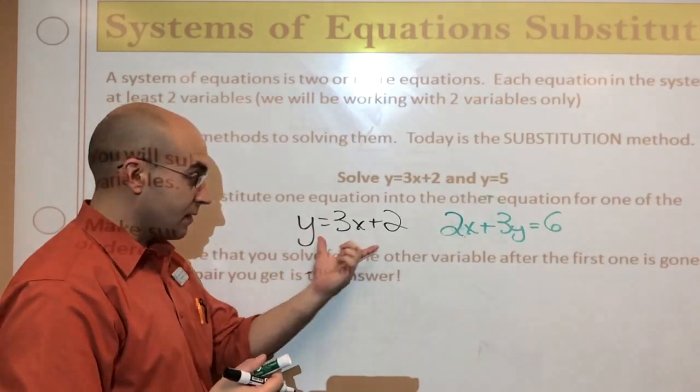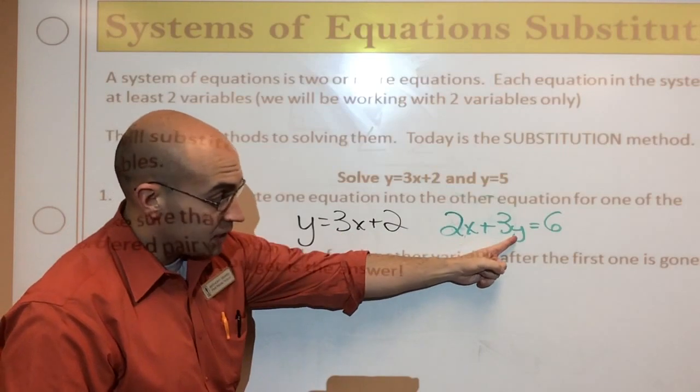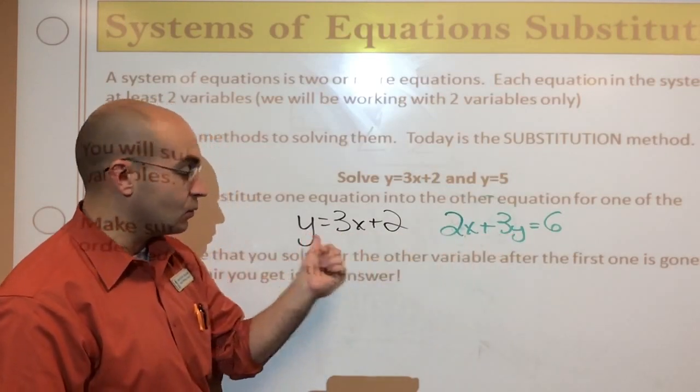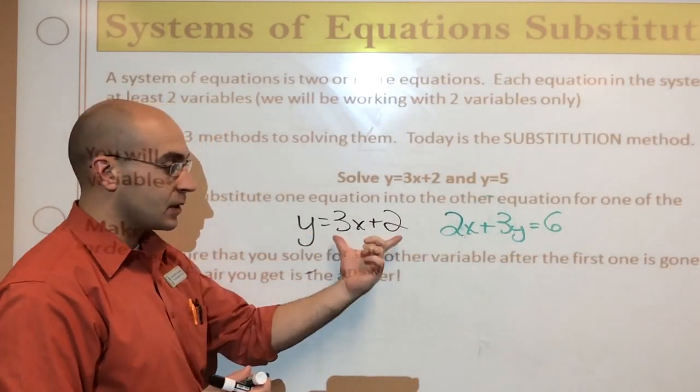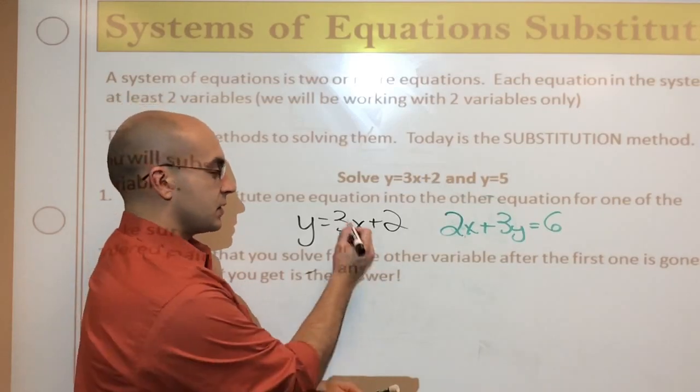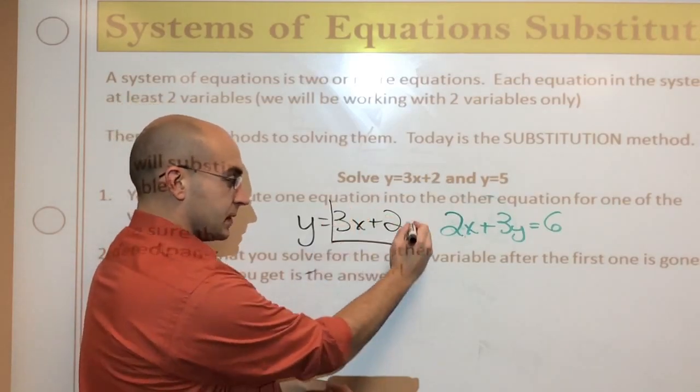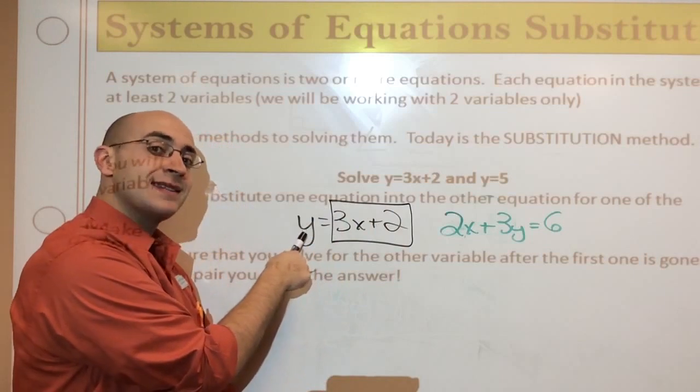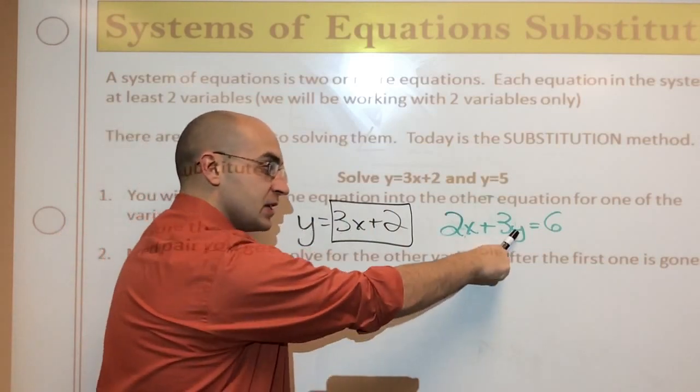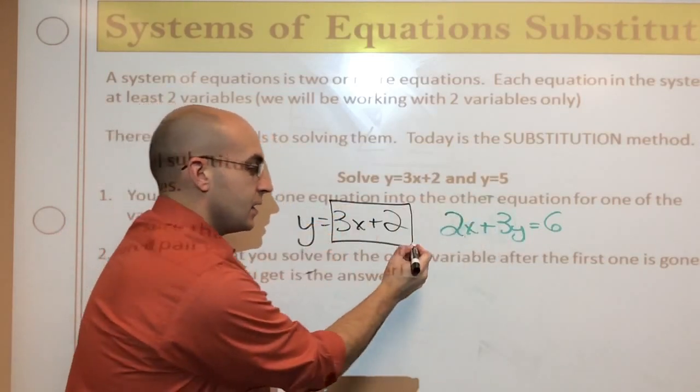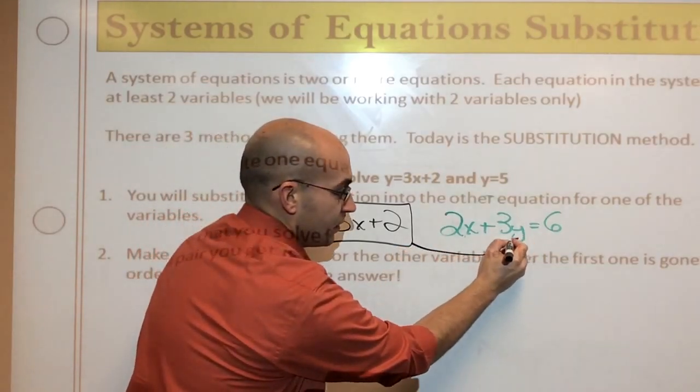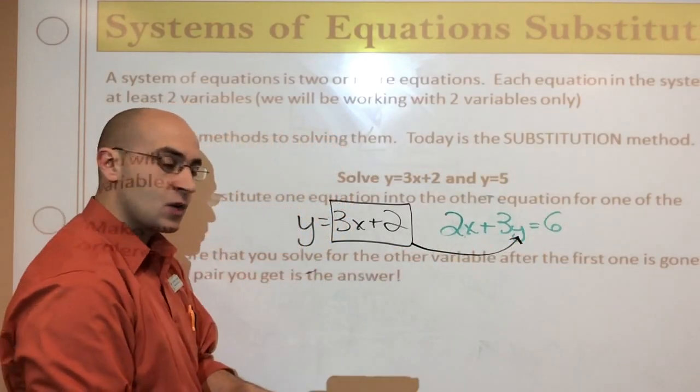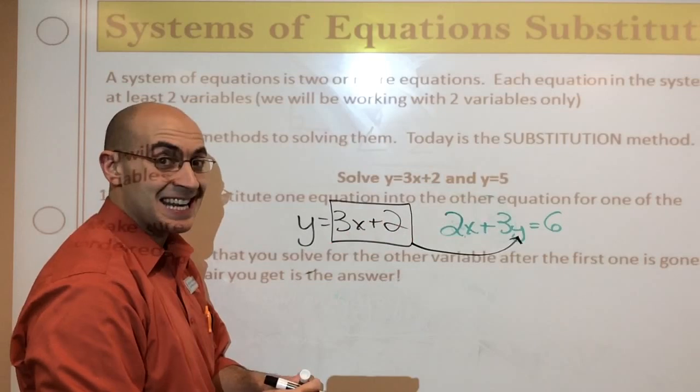Now, this one you'll see more often because this is really the best way to use a substitution way to solve. So, y equals 3x plus 2. Well, I'm going to substitute this right here for y because I'm telling you what y is. I'm going to plug this in right over here, so let's see how this works out. So, y equals 3x plus 2. That's what it's telling me y is. Because y is by itself, I can move this over here and plug it right in there. So, I'm going to do this right here like that.